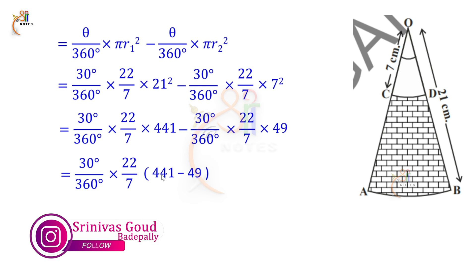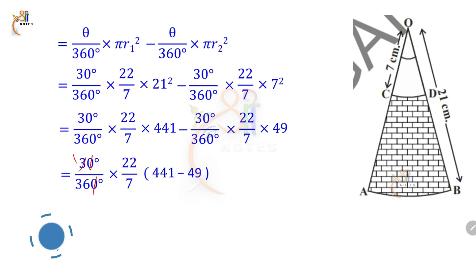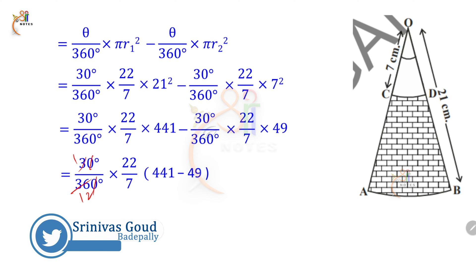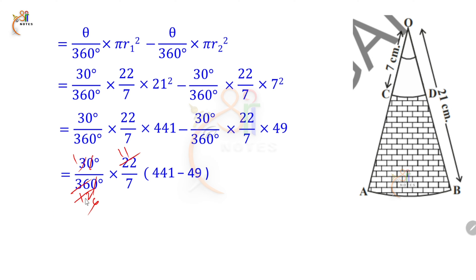Now simplify. 30 by 360 simplifies: cancel zeros, giving 3 by 36, then 1 by 12. Then 12 and 22 simplify to give 11 by 1. Combine: 1 by 6 into 11 by 7, giving 11 by 42 remaining.